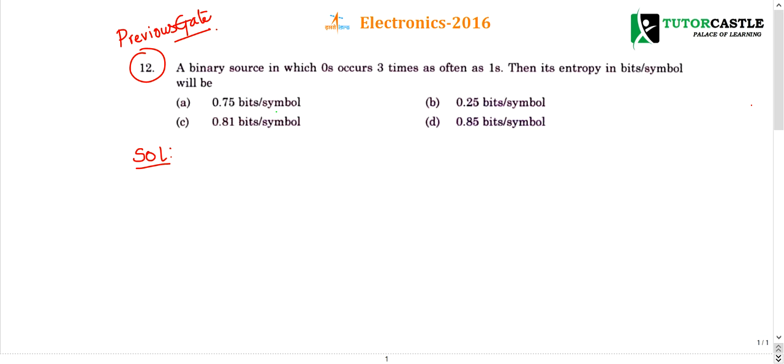He has given that probability of zero occurs, meaning the probability of occurrence of zero equals three times probability of one. So from the question itself, you can frame one equation. I'll write the equation I obtained.